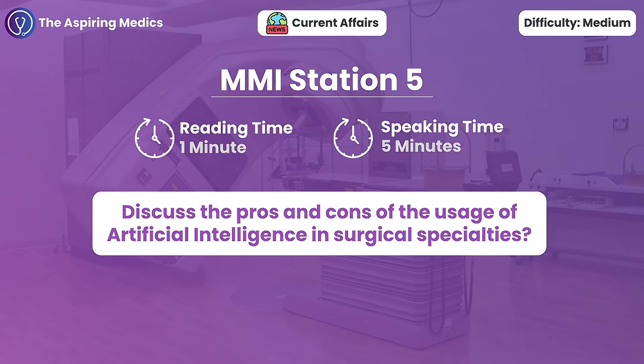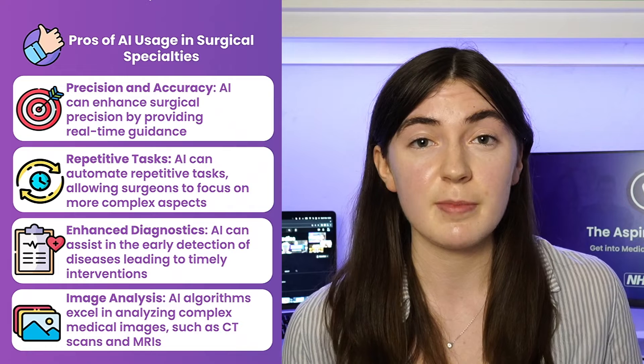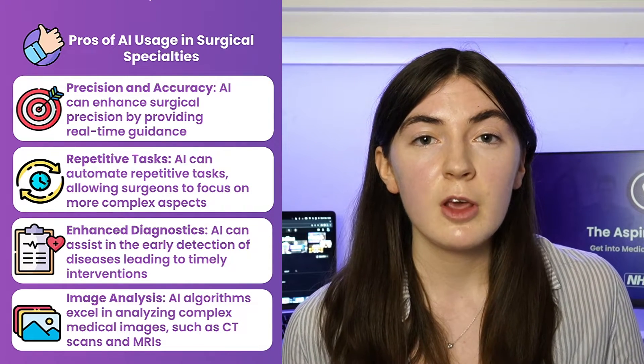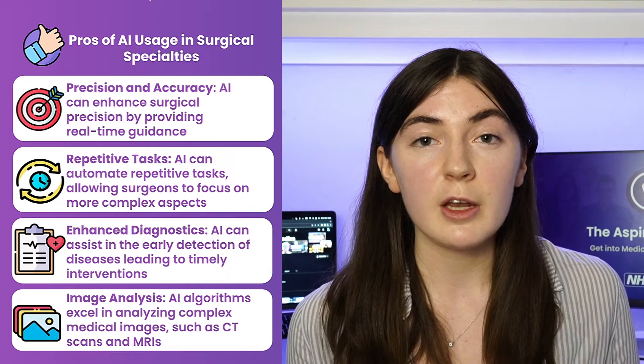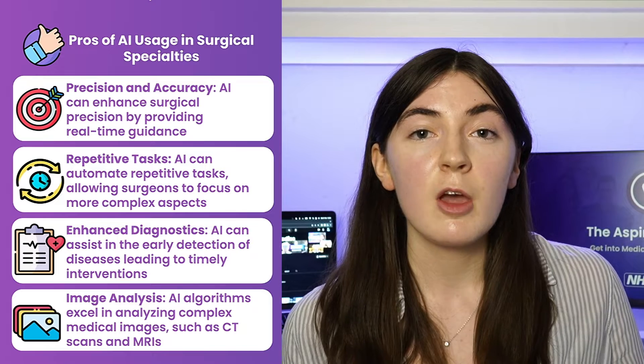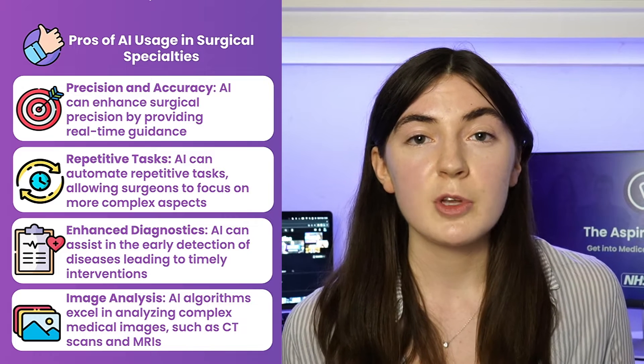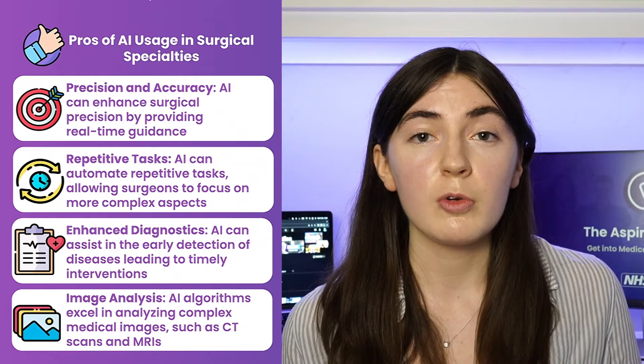Discuss the pros and cons of using AI in surgical specialties. I would think of AI as the use of specialised computer systems to process large amounts of data to recognise trends or patterns. We can look at AI in terms of prevention, diagnosis, and treatment. For prevention, we can use AI to sort patients into risk groups, and for those higher-risk patients recommend lifestyle strategies that can help prevent a condition from developing or progressing.